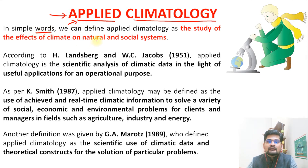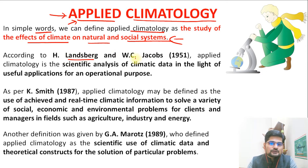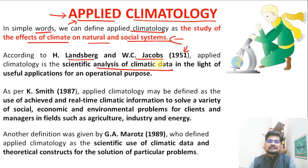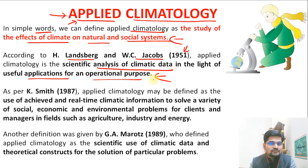In simple words, applied climatology is the study of effects of climate on natural and social systems. Many scholars have defined applied climatology in different ways. For example, H. Landsberg and W.C. Jacobs in 1951 defined applied climatology as the scientific analysis of climatic data in the light of its application for a particular purpose — basically using climatological data, analyzing it, and interpreting the result in terms of its particular purpose.